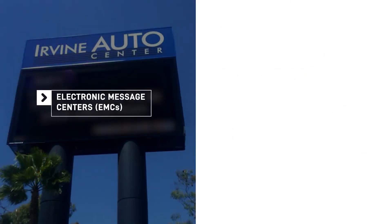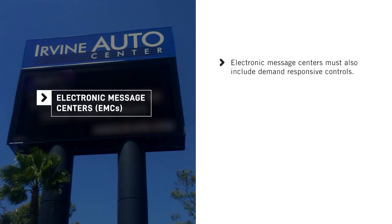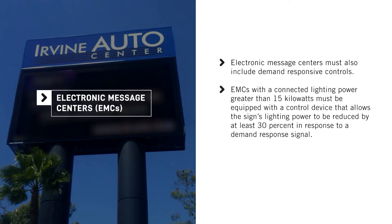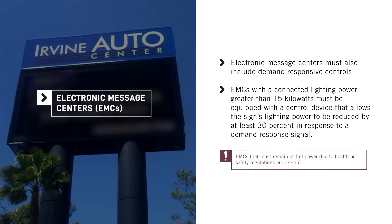A specific type of outdoor sign called an electronic message center, or EMC, must also include demand responsive controls. EMCs with a connected lighting power greater than 15 kilowatts must be equipped with a control device that allows the sign's lighting power to be reduced by at least 30% in response to a demand response signal. EMCs that must remain at full power due to health or safety regulations are exempt.